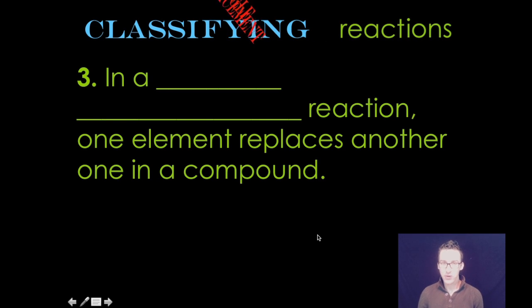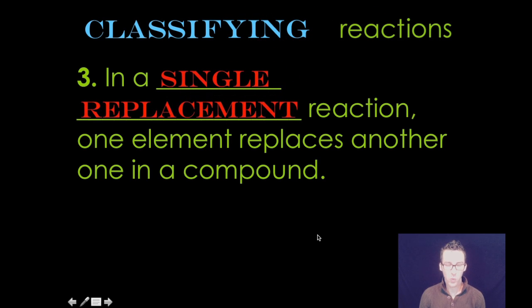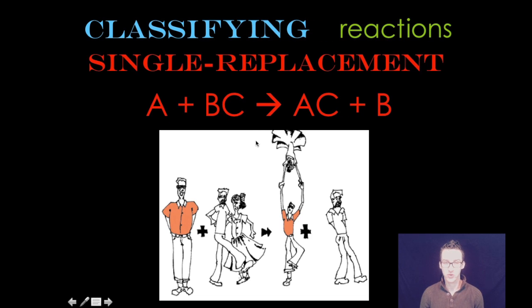Reaction type number three, a single replacement reaction, is where one element, single element, replaces another one in a compound. Now, to describe this, I like to think of a dance floor. You've got this great looking gentleman on the dance floor all by himself, corresponds to your element that's all by itself. And you've got this great looking couple on the dance floor as well, corresponds to that compound.